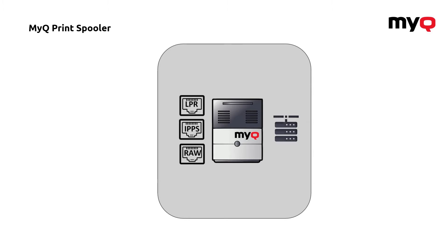It automatically listens on the three main ports. The default one is LPR — the 515 LPR port through which MyQ receives all the incoming print jobs. It can also use the IPPS or RAW protocols, but these two must be activated extra. It will not cost you anything more than just a basic license, but you have to activate it extra.